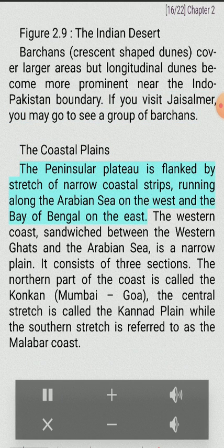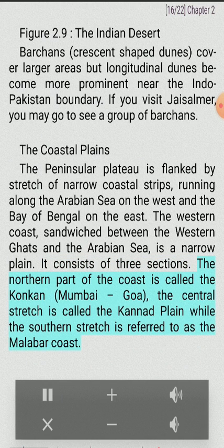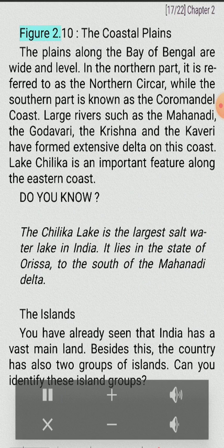The Coastal Plains: the peninsular plateau is flanked by a stretch of narrow coastal strips running along the Arabian Sea on the west and the Bay of Bengal on the east. The western coast, sandwiched between the Western Ghats and the Arabian Sea, is a narrow plain consisting of three sections. The northern part is called the Konkan (Mumbai–Goa), the central stretch is called the Kannad Plain, and the southern stretch is referred to as the Malabar Coast. The plains along the Bay of Bengal are wide and level — the northern part is referred to as the Northern Sarkar, while the southern part is known as the Coromandel Coast.